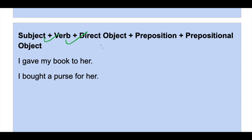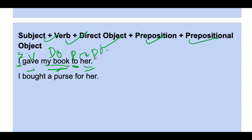Next: subject plus verb plus direct object plus preposition plus prepositional object. 'I gave my book to her' — 'I' is subject, 'gave' is verb, 'my book' is direct object, 'to' is preposition, and 'her' is prepositional object. 'I bought a purse for her' — 'purse' is direct object, 'for' is preposition, and 'her' is the prepositional object.